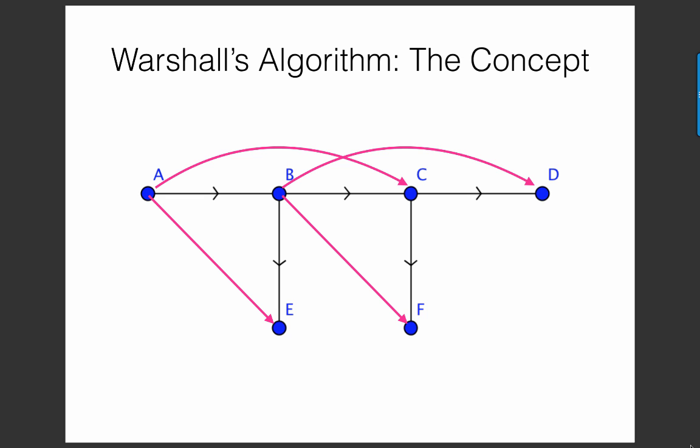For example, starting at A, since we linked A to C in the first round, there is now a second level connection from A to F. In the original digraph, without the pink edges, this was a third level relationship. A is connected to F by a path of three edges.